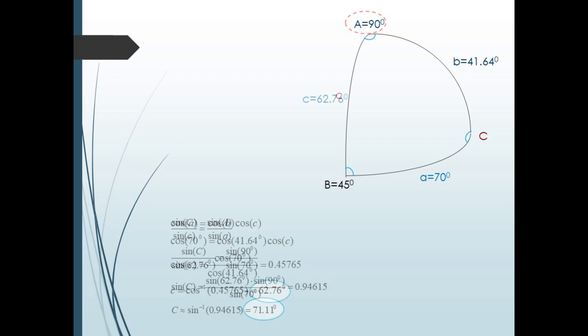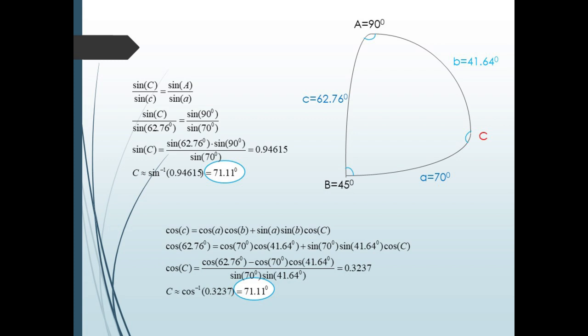Now we have side c, so we can again use our law of sines ratio to find angle C. We have: sin C / sin 62.76 = sin 90 / sin 70. This gives sin C ≈ 0.94615, so C ≈ 71.11 degrees. Now we also had three sides here, so we could have also used our law of cosines to find C — you can see the result is the same.